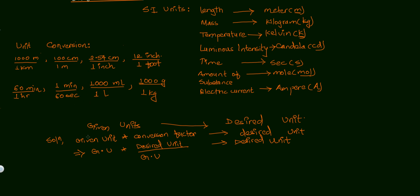When converting units, you multiply the given unit by the conversion factor. The desired unit must be on the numerator side, while the given unit goes on the denominator side, so that the given units cancel out and leave you with the desired unit. This is how we convert units — it's very important in chemistry and other physical sciences.